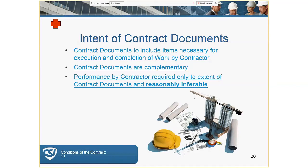The intent of the contract documents is a very important concept. Performance is based on what can be reasonably inferred by the documents — and we litigate what 'reasonably inferred' means. Make it as clear as possible because contractors are not mind readers. There's an old military adage: if an order can be misunderstood, it will be. Don't repeat things over and over — that might get changed in one area but not another, causing a conflict. The coordination of documents is so, so important.